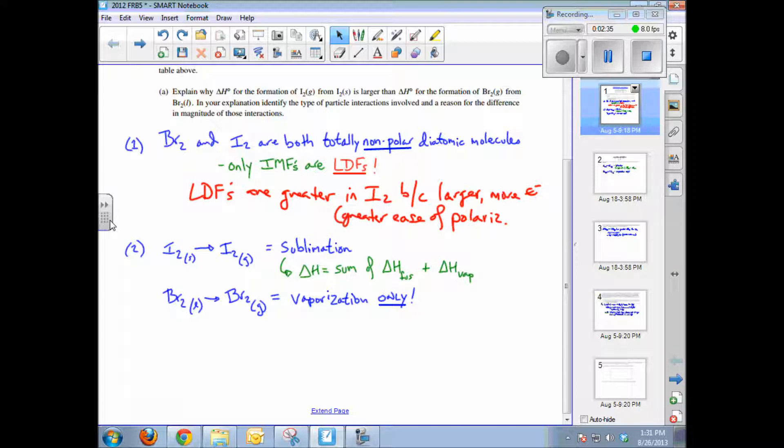Whereas bromine goes from a liquid phase to a gas phase, only one phase change instead of two. So the delta H of formation for the gas phase is simply vaporization only. So you have a higher magnitude when the delta H of formation goes through two phase changes instead of one.